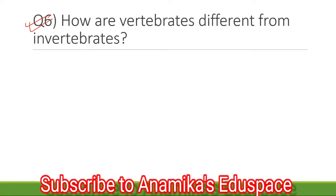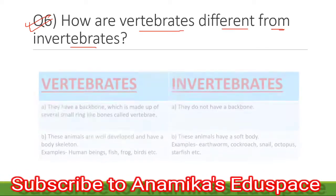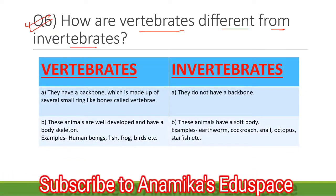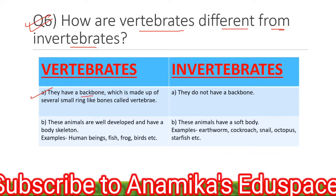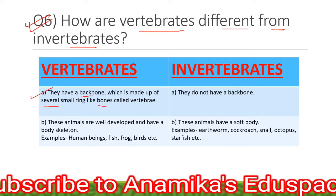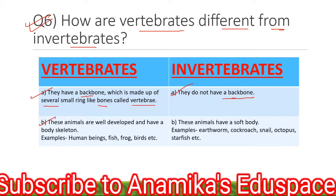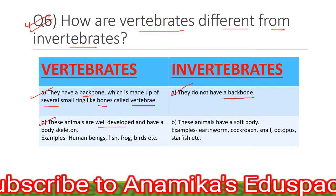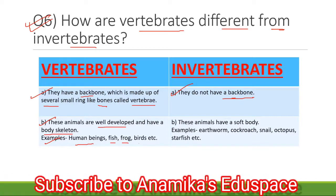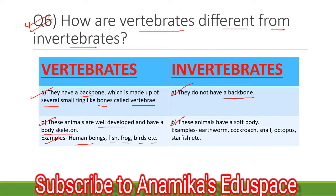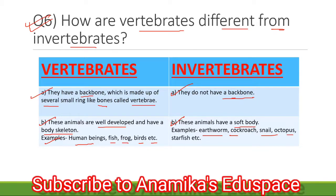Into question number 6: How are vertebrates different from invertebrates? Vertebrates have a backbone which is made up of several small ring-like bones called vertebrae. These animals are well developed and have a body skeleton. Examples: human beings, fish, frog, birds, etc. Invertebrates do not have a backbone. Examples: earthworm, cockroach, snail, octopus, starfish, etc.